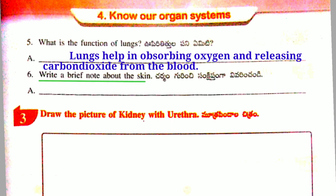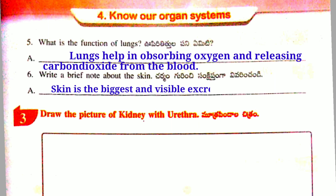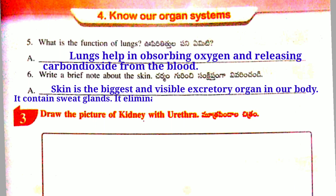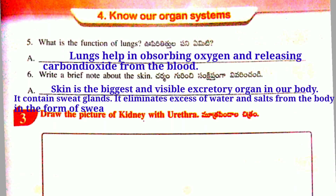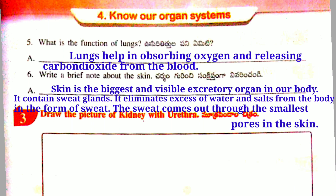Answer: Skin is the biggest and visible excretory organ in our body. It contains sweat glands. It eliminates excess water and salts from the body in the form of sweat. The sweat comes out through the smallest pores in the skin.